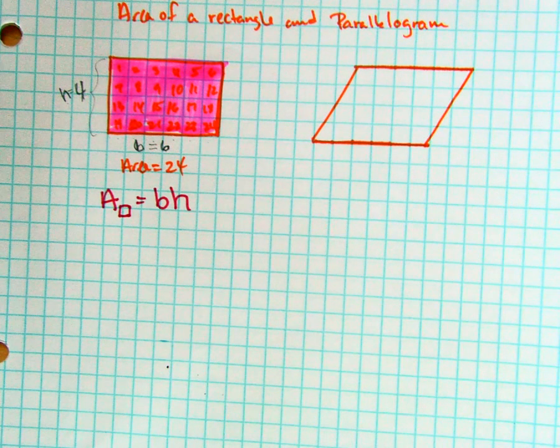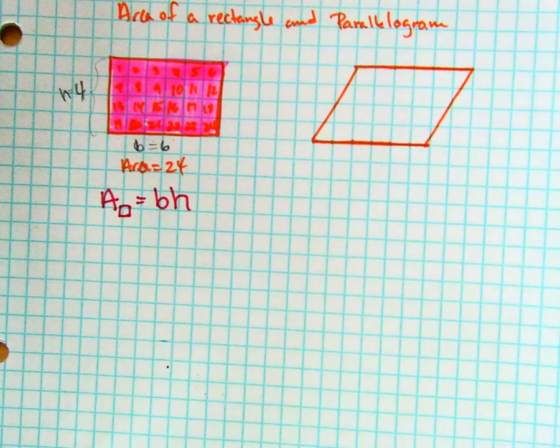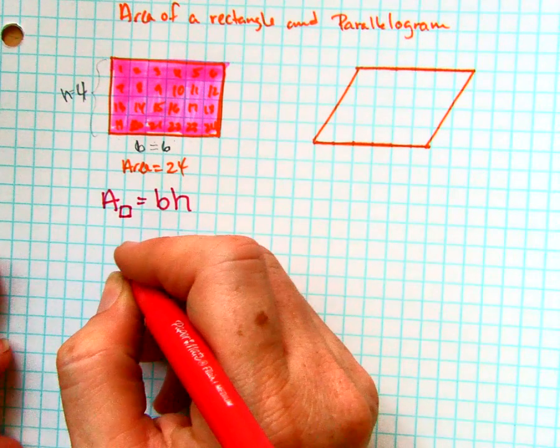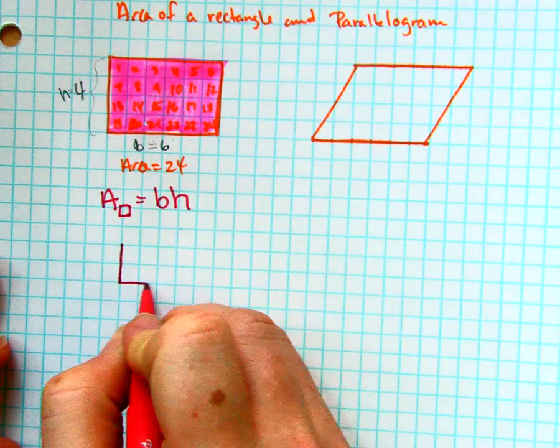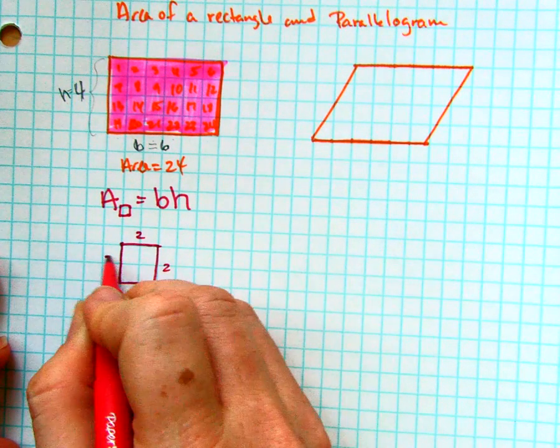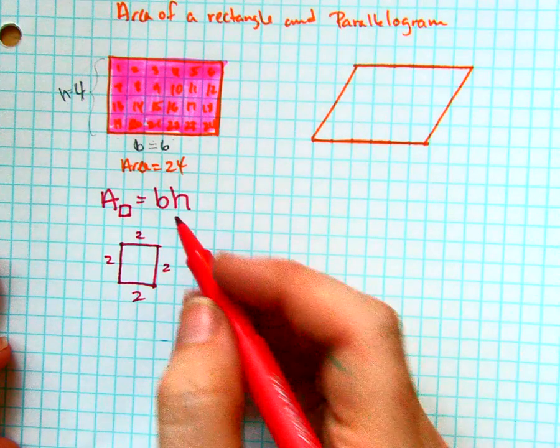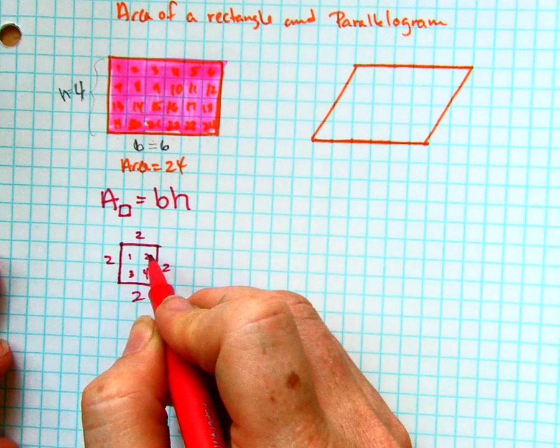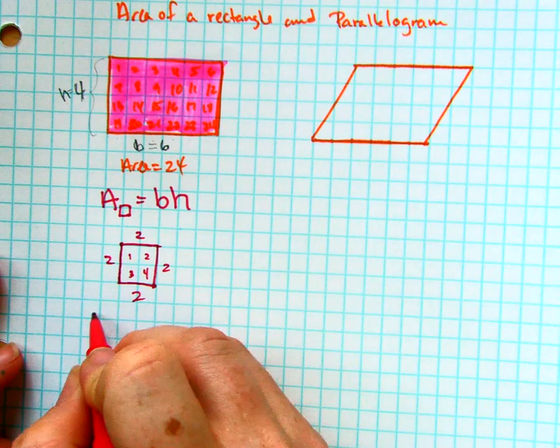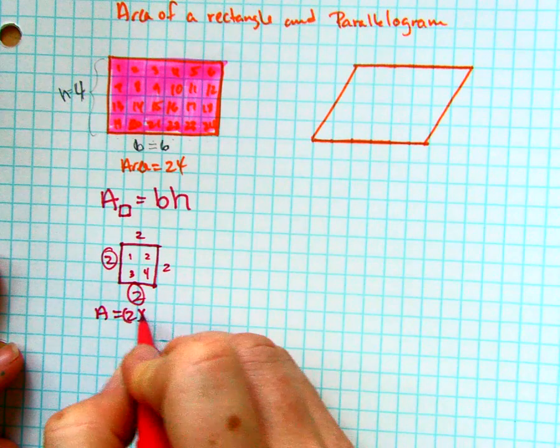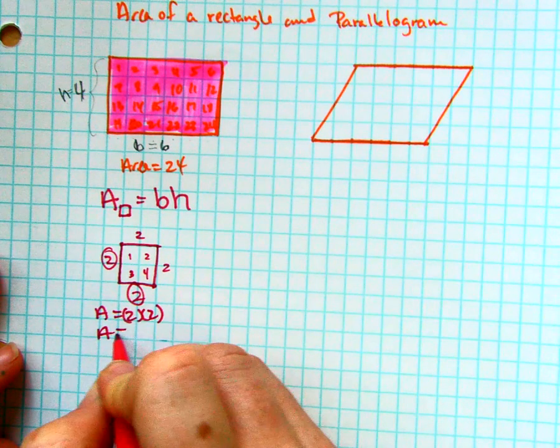Now remember, a square is just a very special kind of rectangle, so it is also base times height. So if you wanted to see a quick example of that, if I did a 2 by 2 square where it's 2 on all sides, it has an area of one, two, three, four square units inside. So you can see here that I could find the area by doing 2 times 2, which is 4.